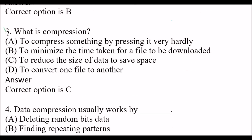Next question: What is compression? Option A: to compress something by pressing it very hard. Option B: to minimize the time taken for a file to be downloaded. Option C: to reduce the size of data to save space. Option D: to convert one file to another. The right answer is option C, to reduce the size of data to save space.